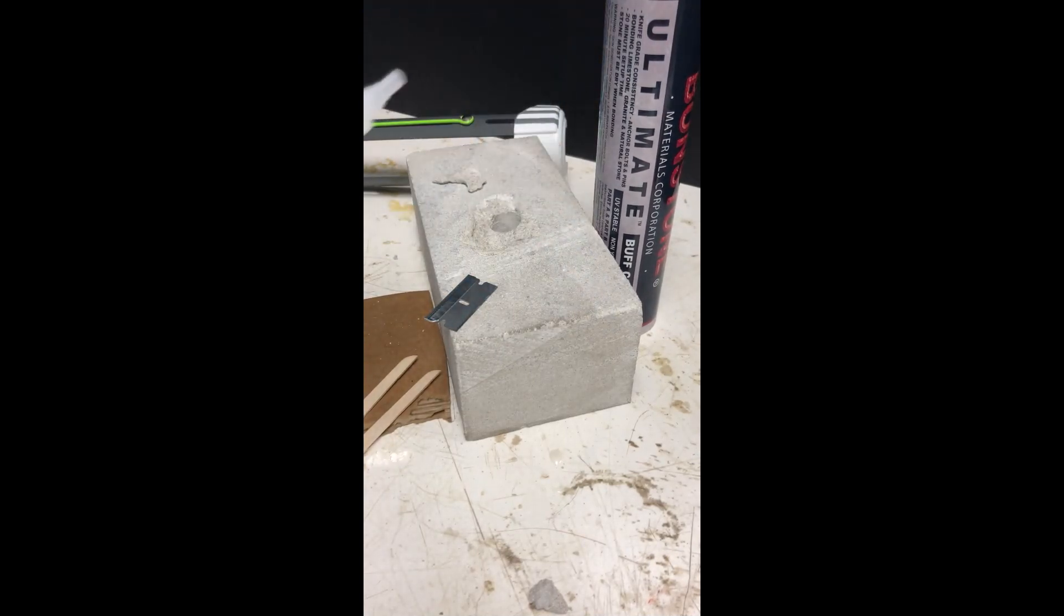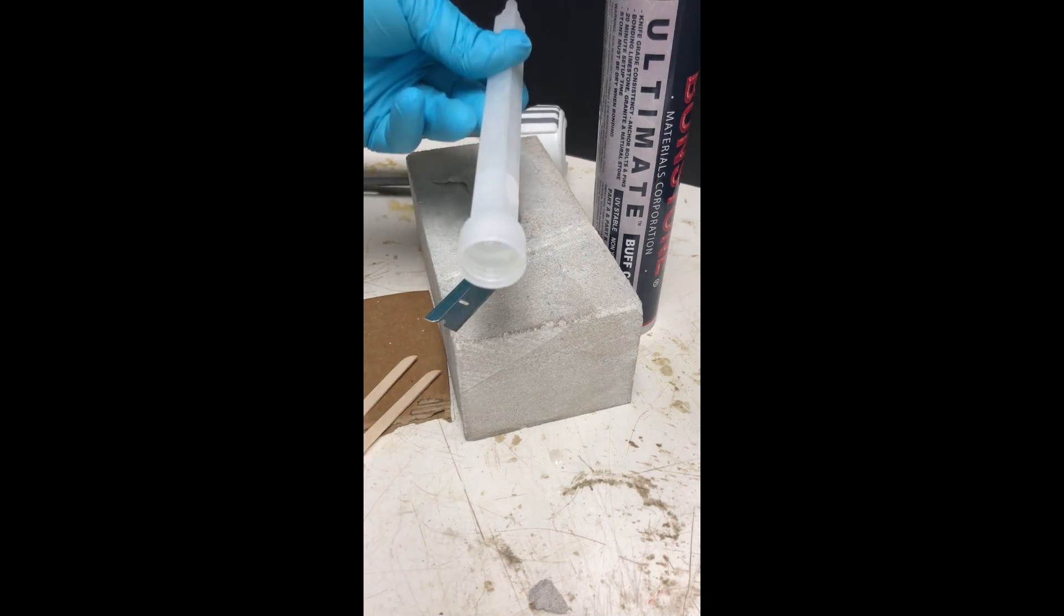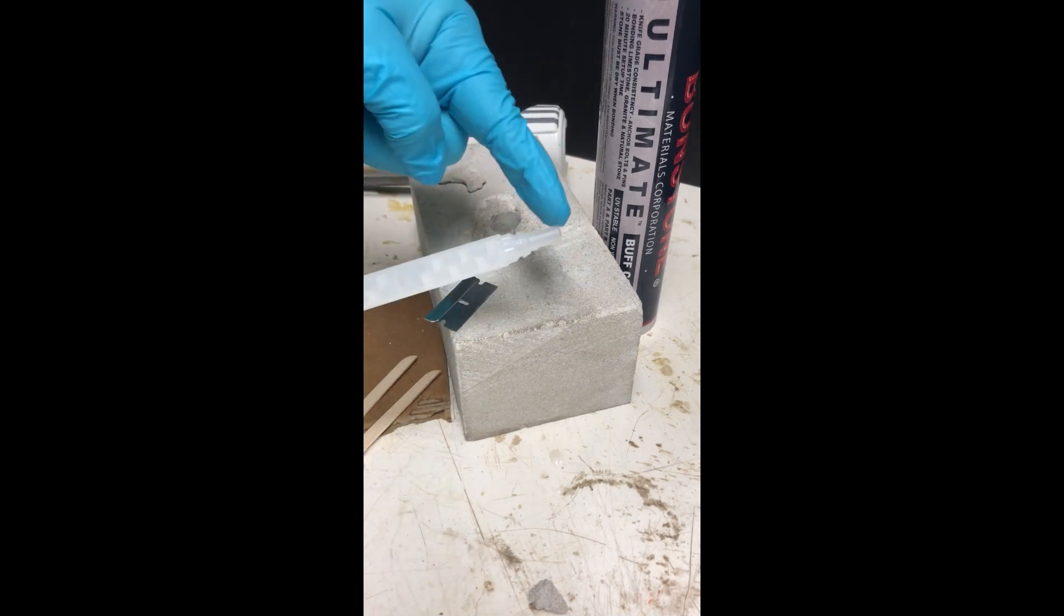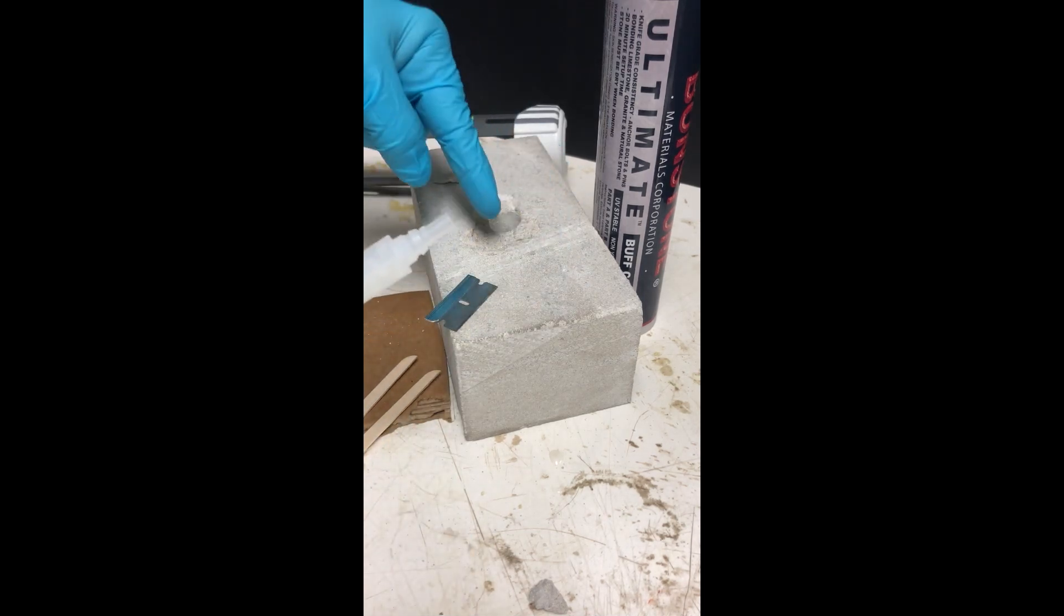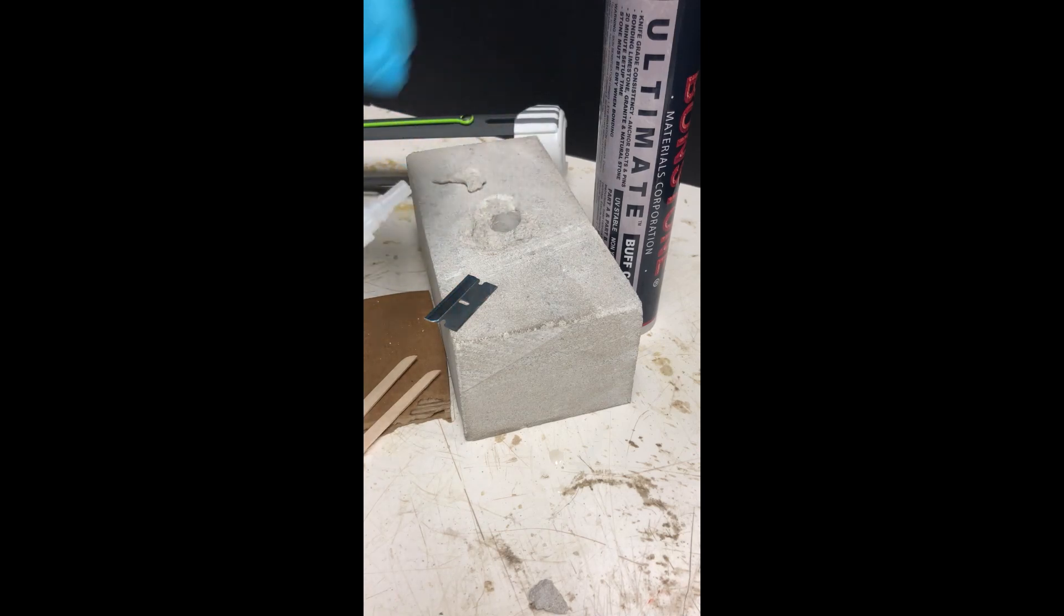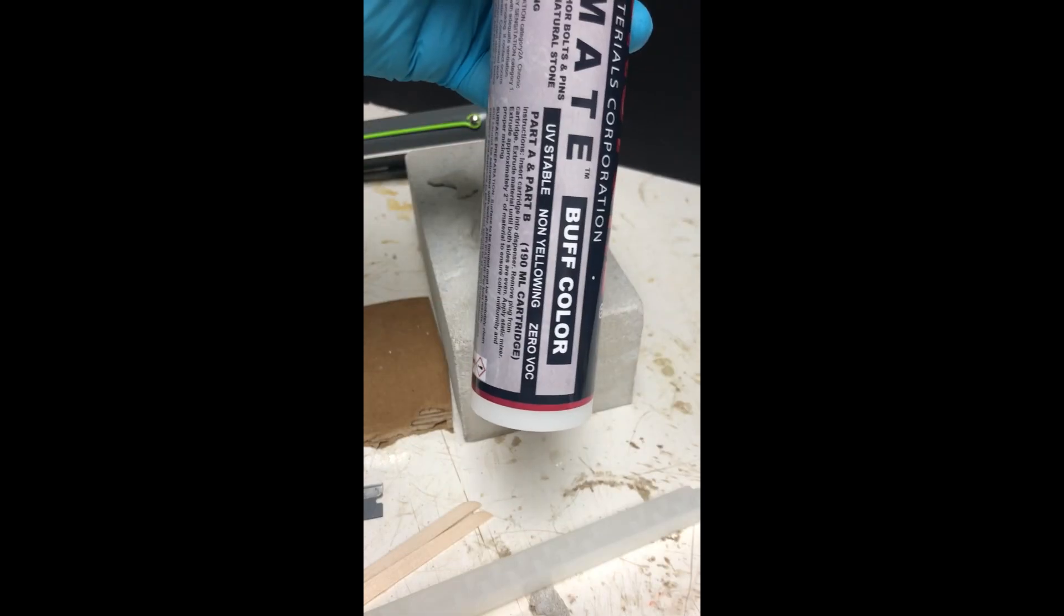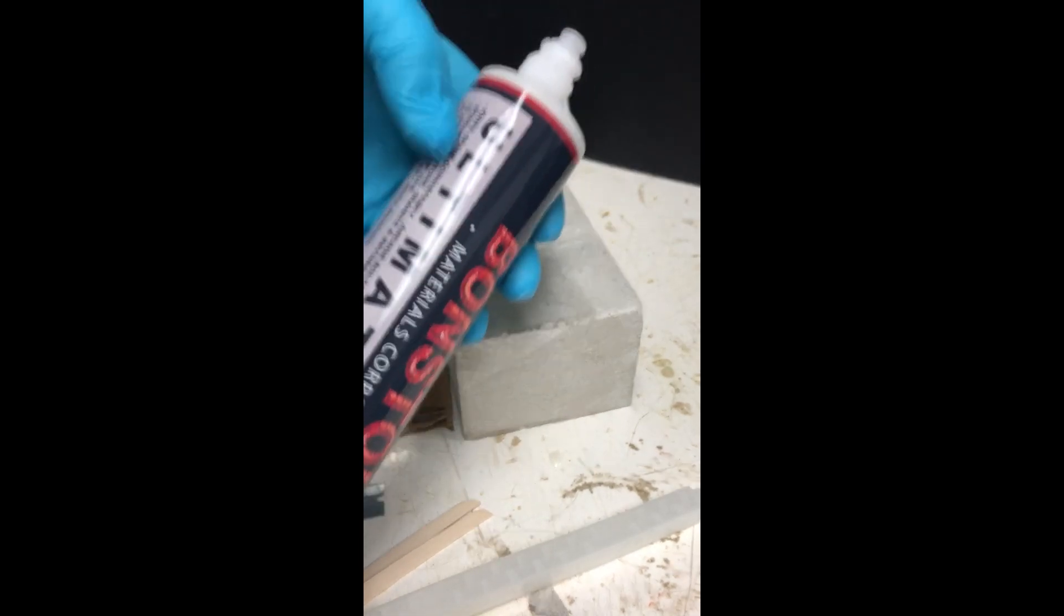If you're doing a larger area, you can use a nozzle and it'll come fully mixed out of the tip. But in this small little area I recommend just punching it out onto a piece of cardboard.